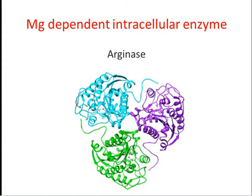Unlike Mg²⁺, Mn²⁺ is paramagnetic, which enables the system to be more easily investigated. Mn²⁺ may in its own right be a component of metalloenzymes; for example in arginase, it stabilizes a reactive hydroxide ion, ensuring that the activated nucleophile is aspartate 124 and aspartate 232 in each of the three subunits, with a catalytic interaction with aspartate 128.